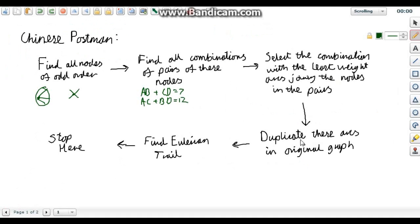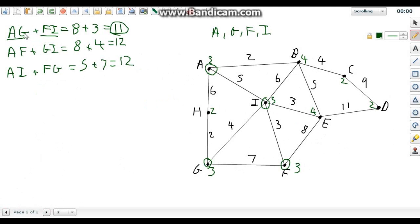We then need to duplicate these arcs in the original graph. So that means A to G of eight was this six and this two. So we're going to draw on another one of weight two and another one of weight six. F to I, we're directly connected by three. So we're going to draw another one of three.